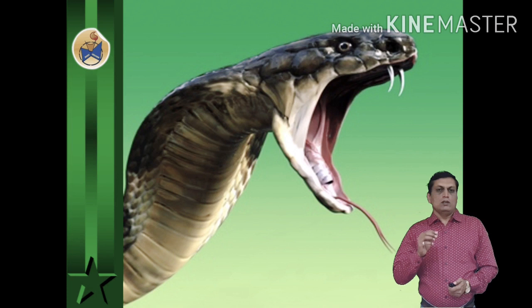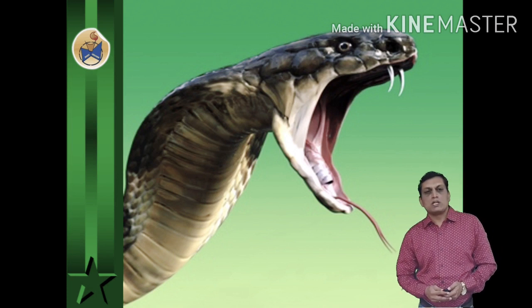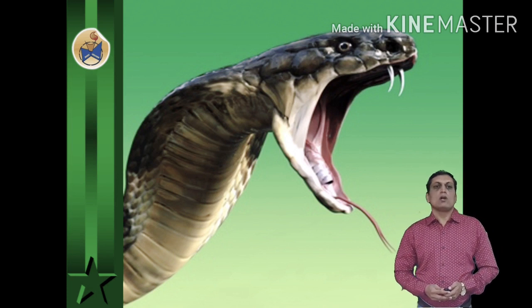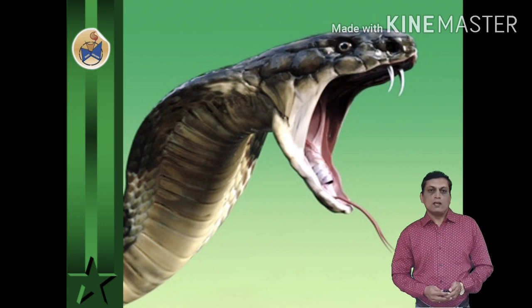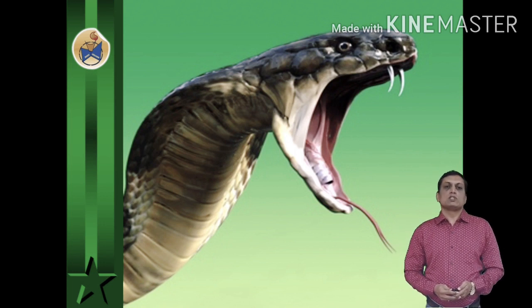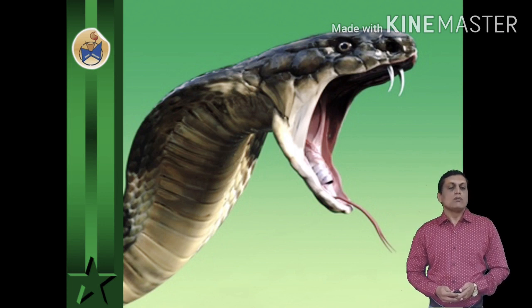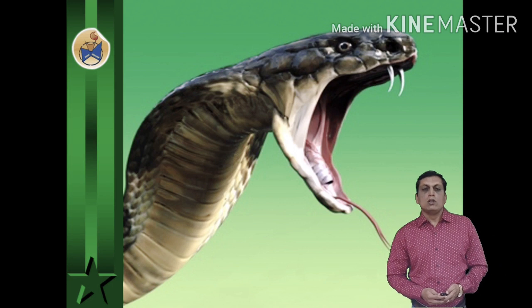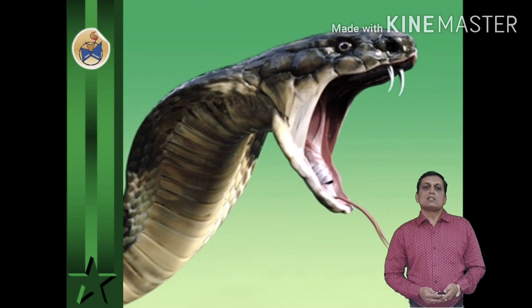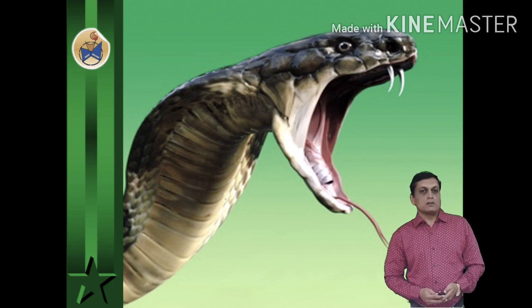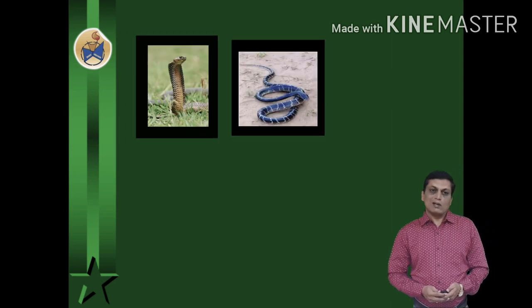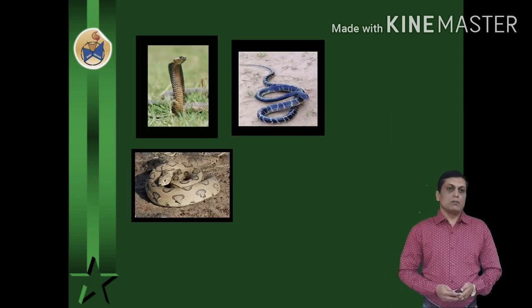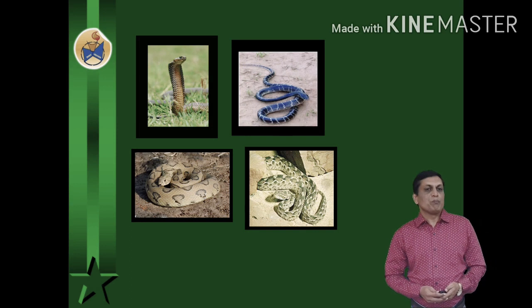Dear students, there are over 3000 species of snakes found on every continent except Antarctica, and there are about 270 plus species of snakes found in our India, out of which about 60 are highly venomous. The Big 4 dangerous snakes of India include Indian Cobra, Krait, Russell's Vipers and South Keral Vipers.